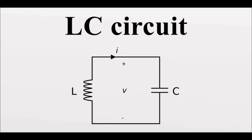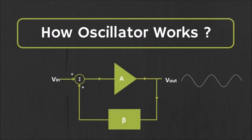LC circuit oscillation. An electronic oscillator is an electronic circuit that provides a periodic oscillating electronic signal, often a sine wave or a square wave. Oscillators convert direct current (DC) from a power supply to an alternating current (AC) signal.